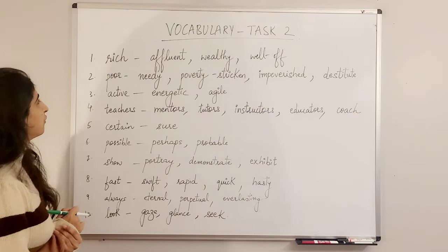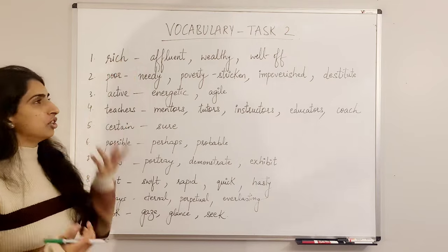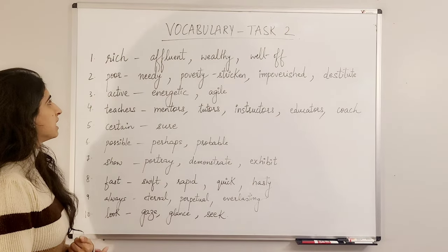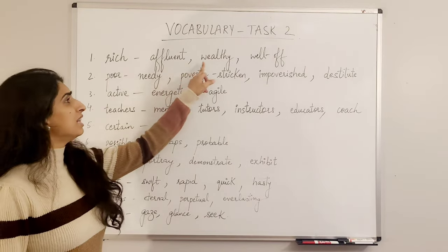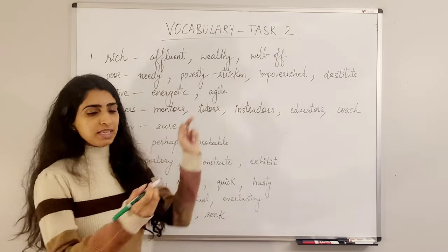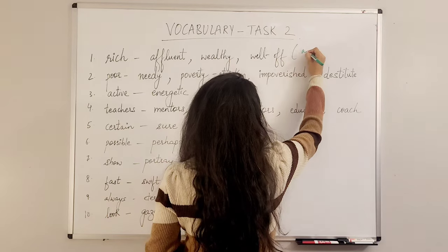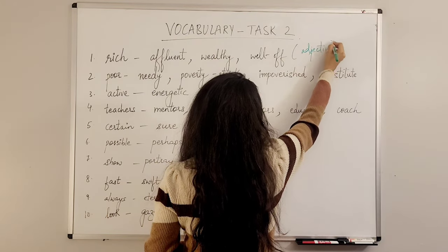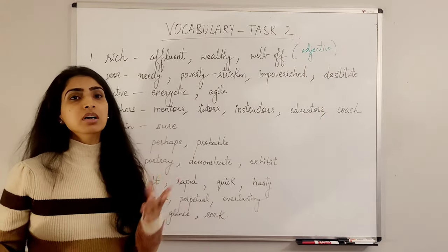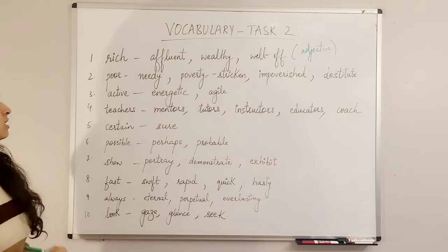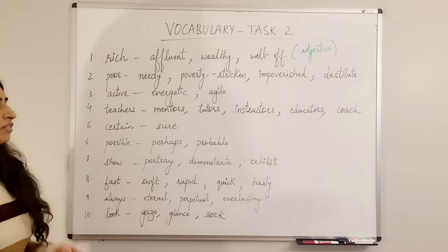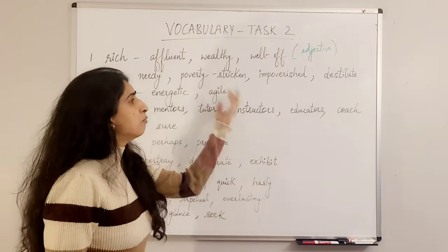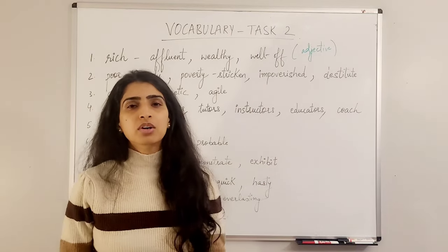The first word is 'rich' — everyone knows it means wealthy. You can say: he is a rich person, an affluent person, a wealthy person, or a well-off person. These are adjectives that come before a noun. Second word: 'poor' — also an adjective. He's a poor person, a needy person, a poverty-stricken individual, impoverished, or destitute.